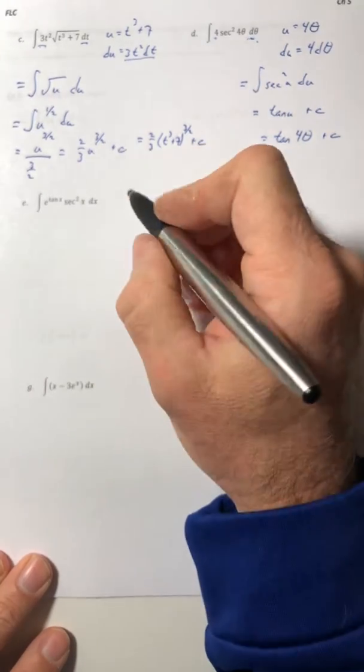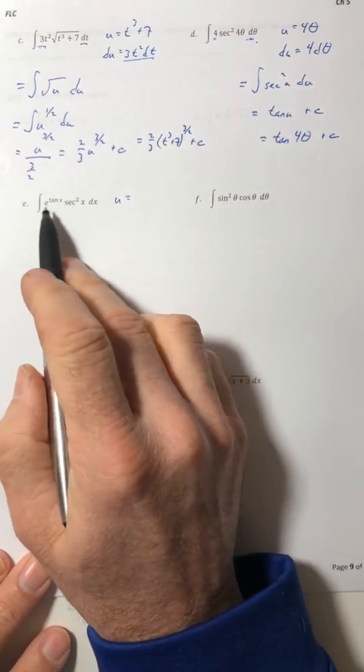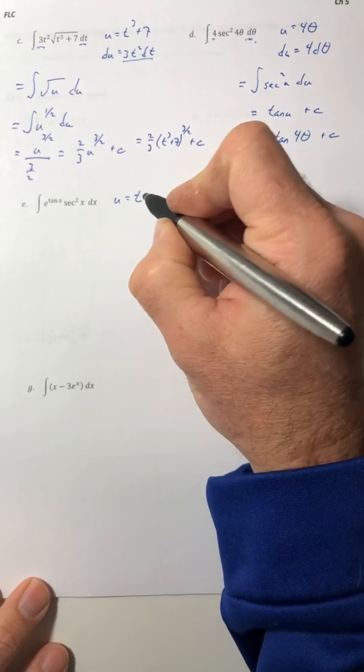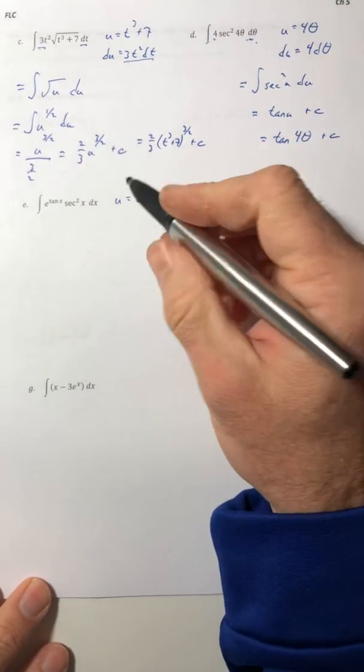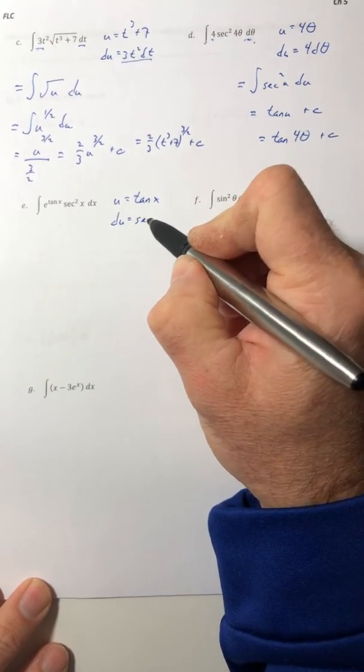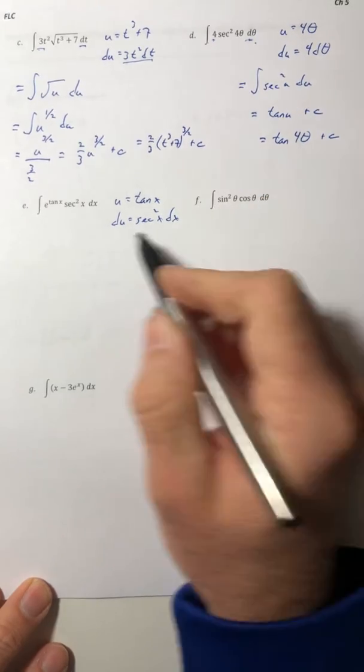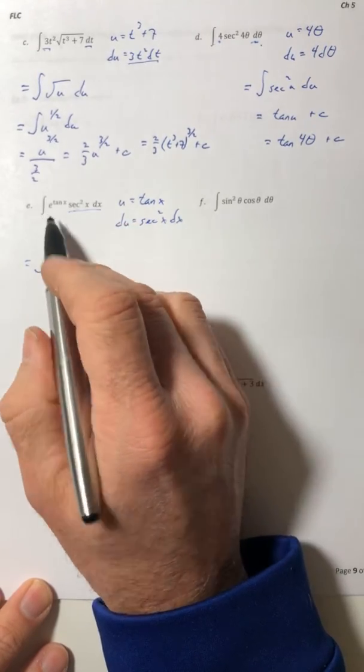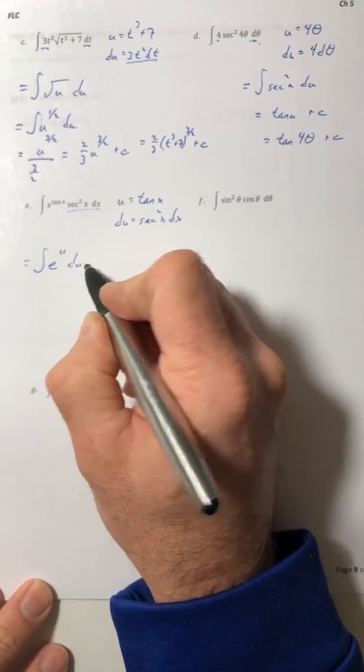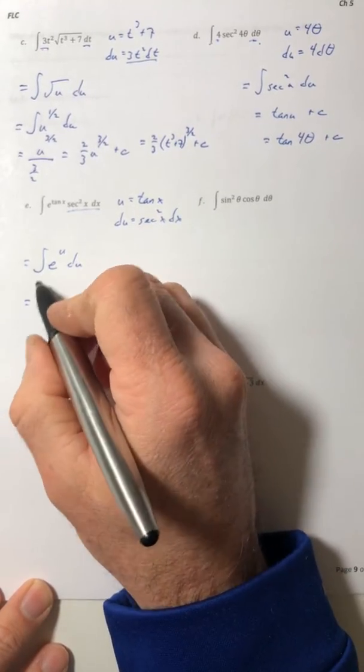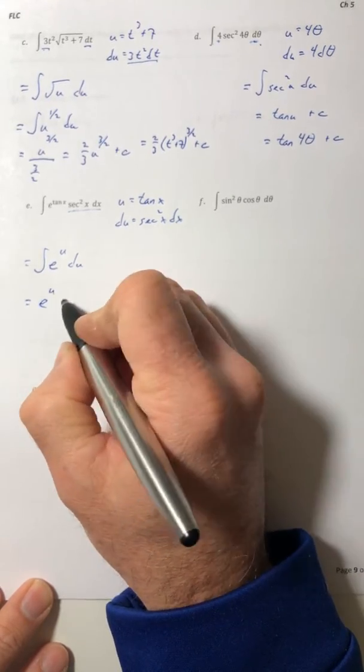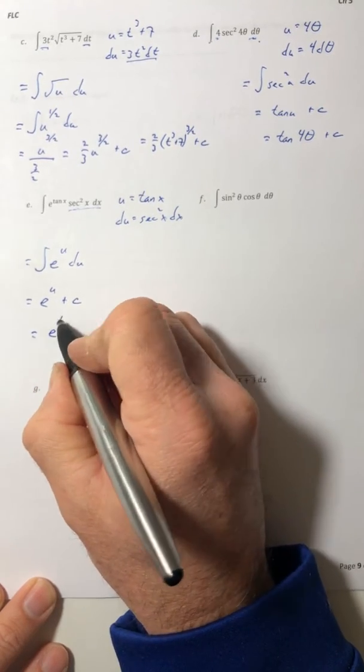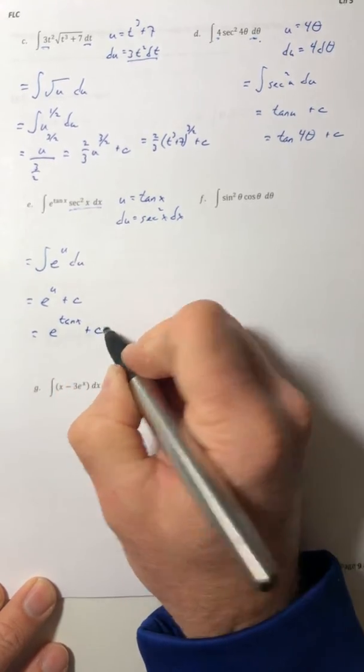Okay, for e's, when we did u-substitution with these we usually picked the exponent to be the u, so let's try that and see if it works. So u is tangent x, which means du is going to equal secant squared x dx, and that's really nice because that's what I've got in the integral. So all of this becomes e to the u du. Well what's the integral of e to the u? e to the u plus c, and then change it back around: e to the tangent x plus c.